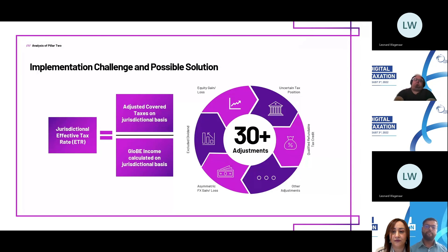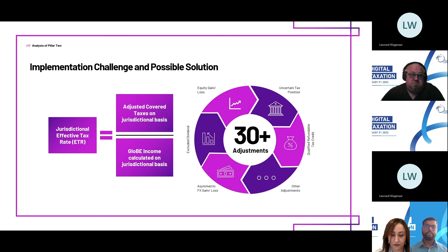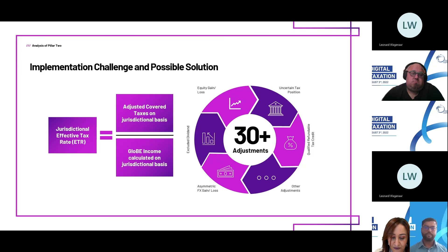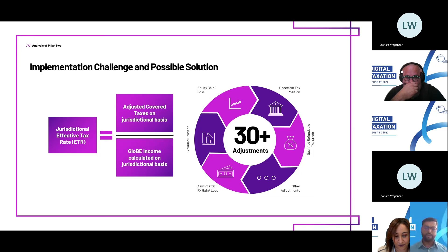Under CbCR, large multinationals with consolidated revenue of 750 million euros file annual country-by-country reports containing financial data. Two relevant data points are income tax accrued in the current year and profit or loss before taxes. Using these, a simplified jurisdictional ETR can be computed. Under the CbCR ETR safe harbor, if a jurisdiction's simplified ETR exceeds a certain threshold, no further Pillar Two GloBE work is required for that jurisdiction. This safe harbor is still work in progress and expected to be released by year end.